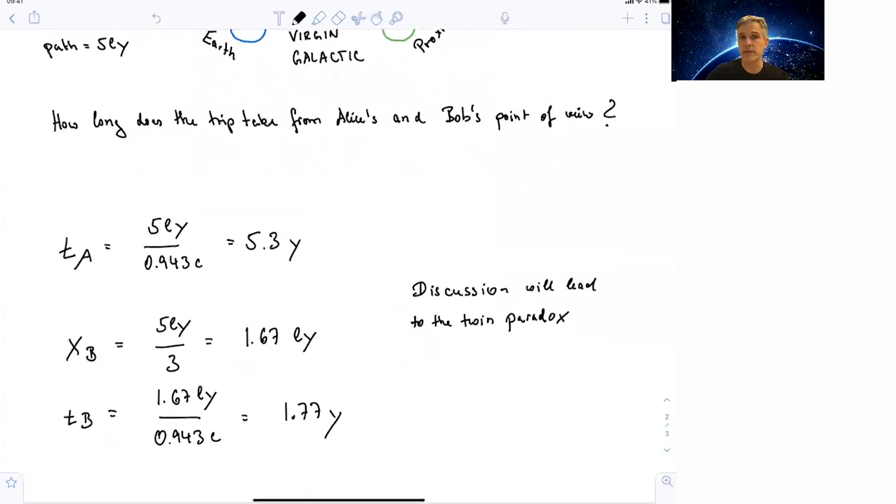So for Alice, the time needed is five light years divided by the velocity, 0.943 times the speed of light. And that gives us 5.3 years. So after 5.3 years, Alice is observing Bob's arrival on Proxima b.